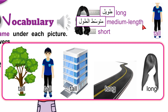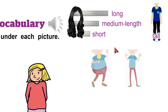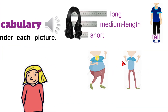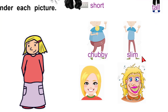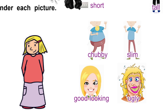Next we have the build. Some people are chubby, others are slim. It's not nice to say that someone is fat — it's correct but not nice. Chubby is a nicer word. For appearance: you could say beautiful if it's a girl; if it's a boy you could say handsome, or good-looking for both girls and boys. Ugly is not a nice word.